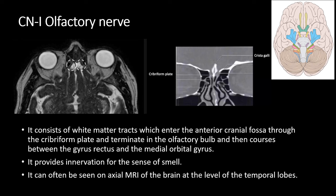Coming to the first cranial nerve, that is the olfactory nerve. It consists of white matter tracts which enter the anterior cranial fossa through the cribriform plate and terminate in the olfactory bulb, then courses between the gyrus rectus and medial orbital gyrus. It provides innervation for the sense of smell, and it can often be seen on axial MRI of the brain at the level of the temporal lobes.